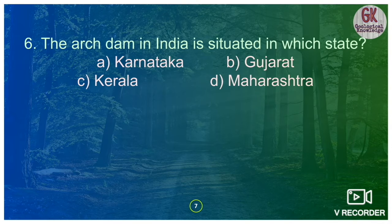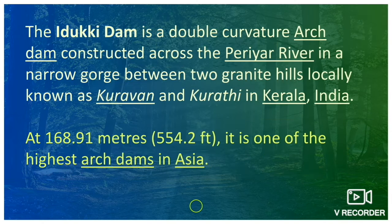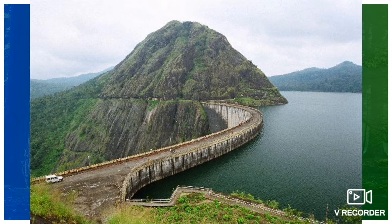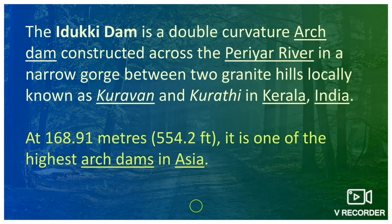Question 6: the arc dam in India is situated in which state — Karnataka, Gujarat, Kerala, or Maharashtra? The best example of an arc dam in India is the Idukki Dam, which is in Kerala state. This is an important arc dam of our country. Looking at a diagram of the Idukki Dam, you can see the dam looks like an arc — that is one of the most diagnostic features by which you can identify an arc dam.